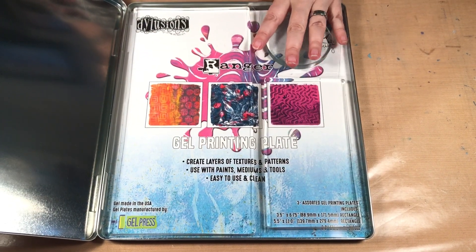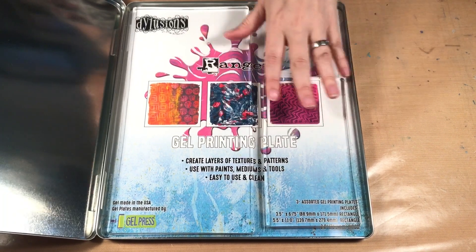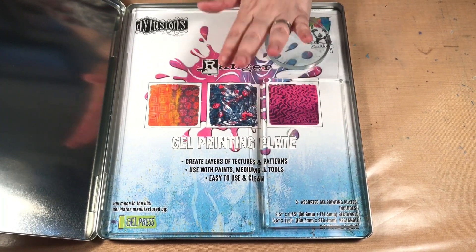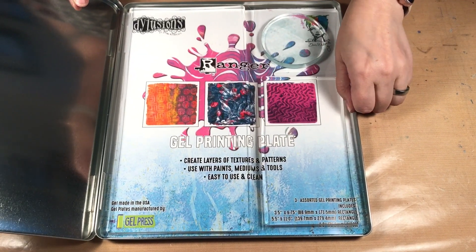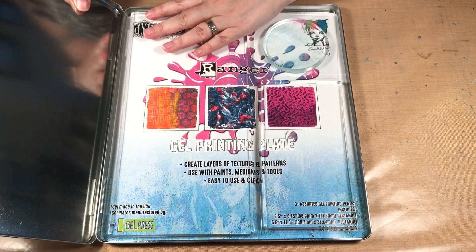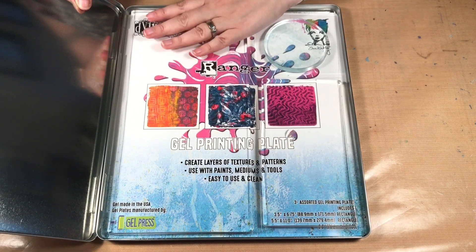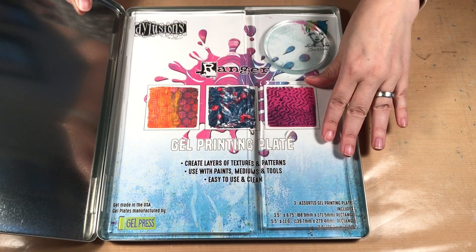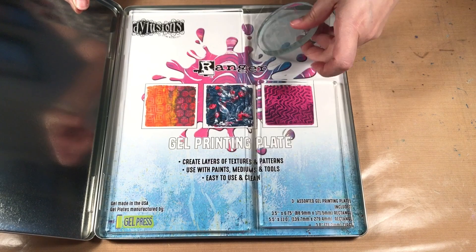The other set is just one large gel press which is great for other techniques. It does not come in this tin, however you can purchase the tins separately and I love that I can just store these in a tin. It makes it really easy to keep them out of the way.